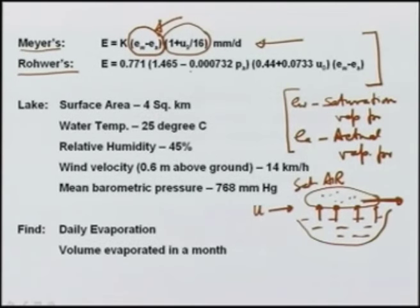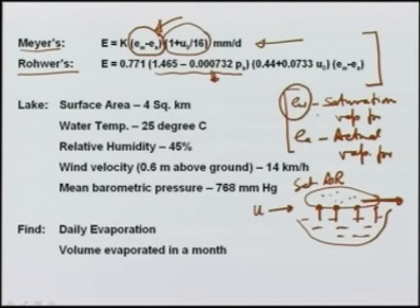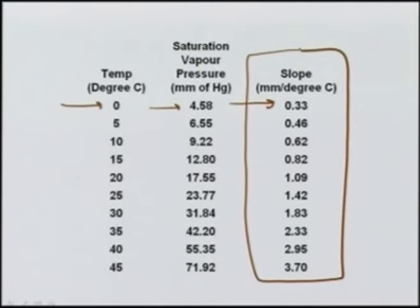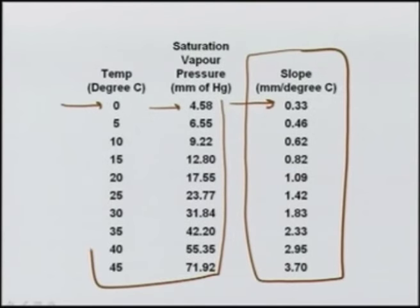Most equations have one factor depending on the saturation deficit and another depending on wind velocity. In Rower's equation there is an additional factor accounting for atmospheric pressure at that location. We need to know E_w, the saturation vapor pressure, which is a function of temperature. Tables are available in literature showing the variation of vapor pressure with temperature, along with the slope of the vapor pressure curve. The saturation vapor pressure E_w changes with temperature, and equations and figures are available for this.